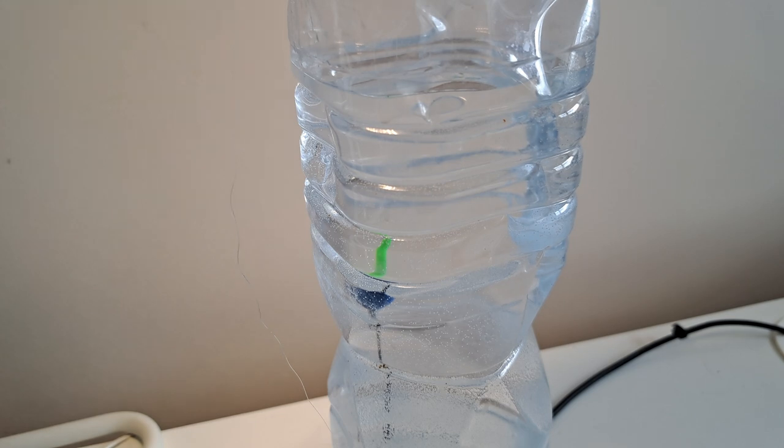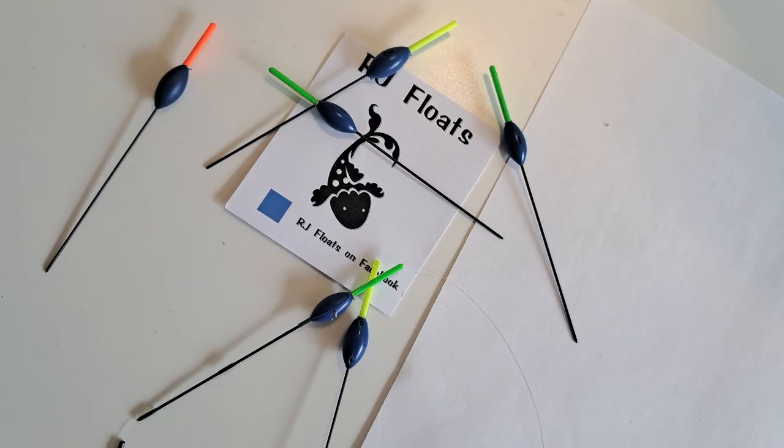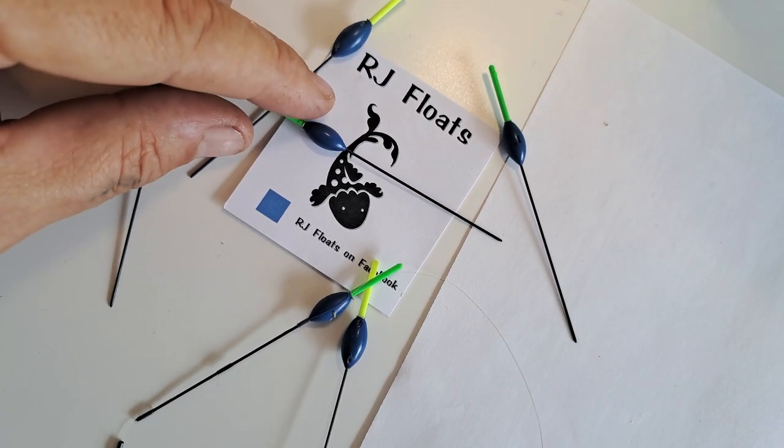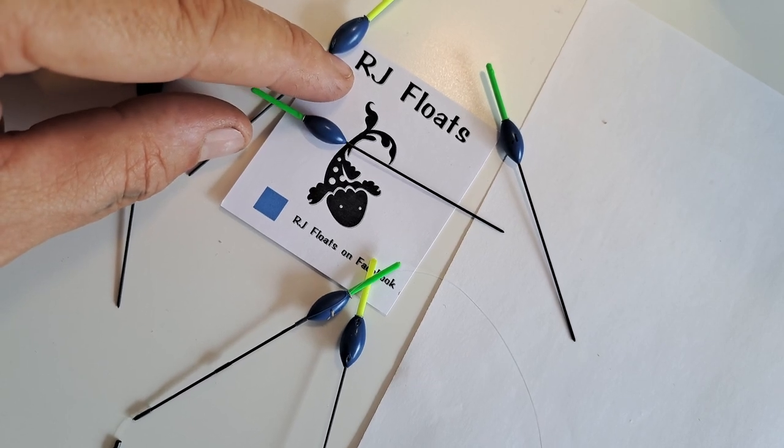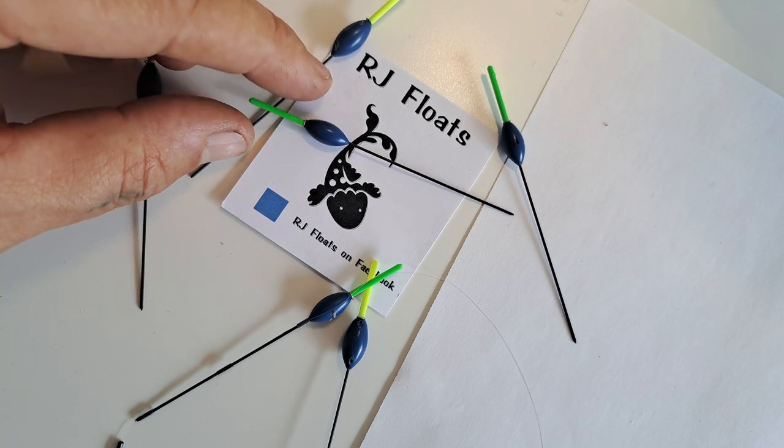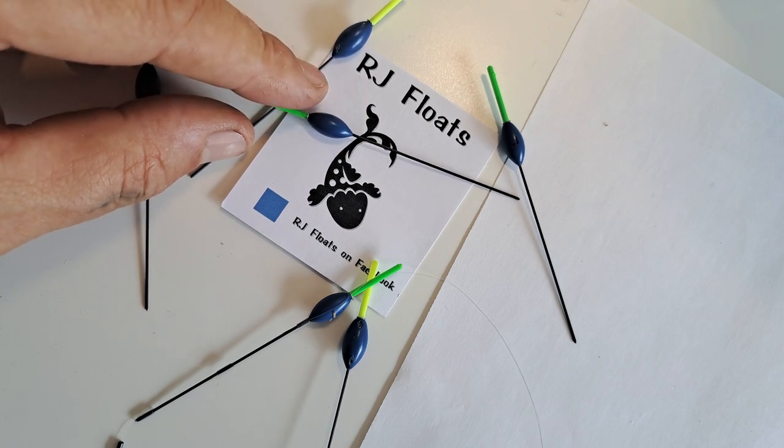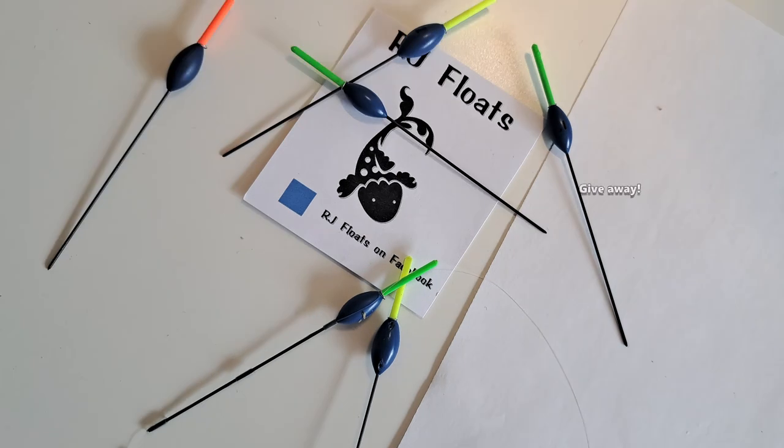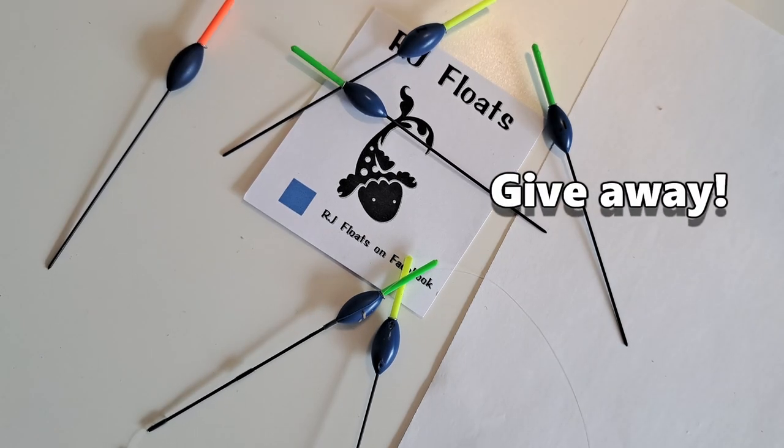So there are the key features of these floats that we've gone through. They're made by Ryan Jordan floats or RJ floats as it's known. I'll put a link to his Facebook page in the description below if you want to ask Ryan to make you any floats. I don't know how much he charges for floats. I'm pretty sure he's very reasonable, very competitive price. And if you want some of these floats, you just need to get in touch with Ryan. I've got six floats here and I'm going to be giving four away to channel subscribers.